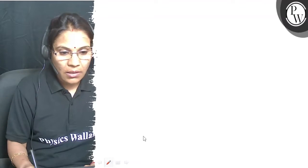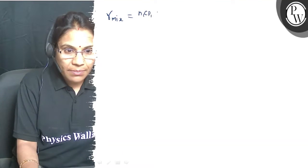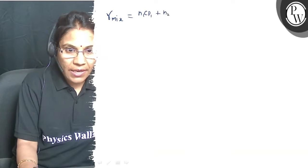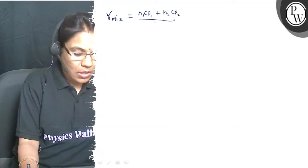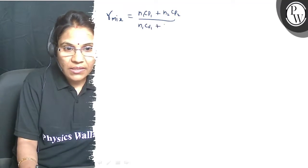For the gaseous mixture of monoatomic and diatomic gas. In this case, gamma value of mixture is equal to n1·cp1 plus n2·cp2 upon n1·cv1 plus n2·cv2.